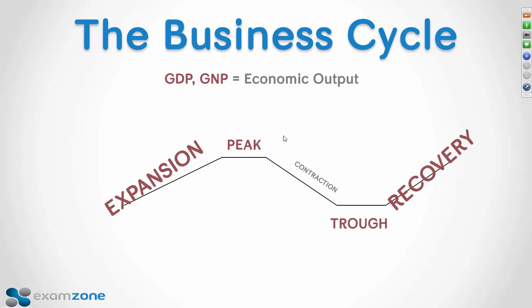Gross domestic product is the total output of goods and services over the quarter, annualized and revised. When the GDP number comes out, that has a lot to do with how strongly the stock market will react, usually. Supermarkets, discount retailers, beverage companies, and tobacco are not very sensitive to the overall economy. But companies that produce steel, heavy equipment, and home appliances tend to be cyclical and don't do well during a contraction. When people are worried about losing their job, they're not going to buy a $2,000 refrigerator, but when the economy is doing well, we sometimes spend $25,000 on kitchen appliances.